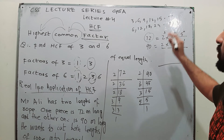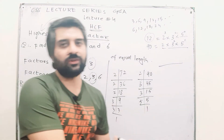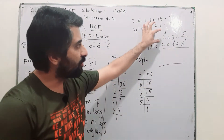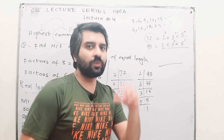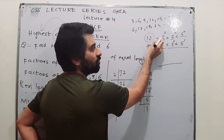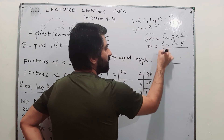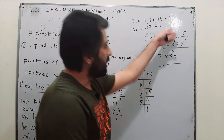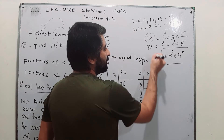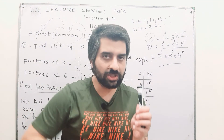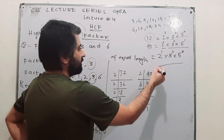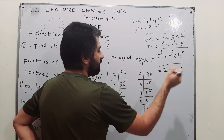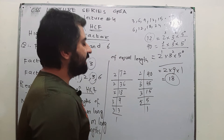Now for HCF — we do the same process as for LCM, but the only difference is that you take out the lowest power from each column. From the column of 2, the lowest power is 2¹. From the column of 3, the power is 3² — equal in both. From the column of 5, take the lesser power: 5⁰. For LCM we used to take the highest power; for HCF we take the lesser power. So HCF = 2¹ × 3² × 5⁰ = 2 × 9 × 1 = 18.